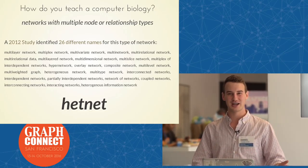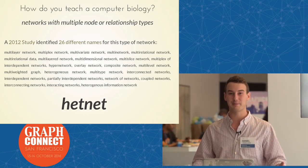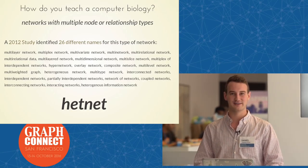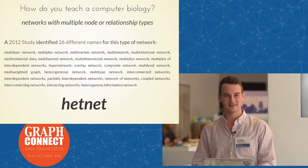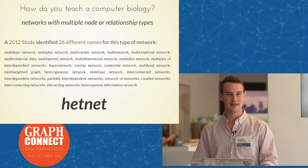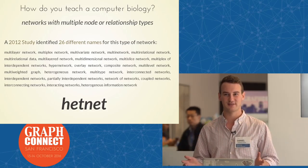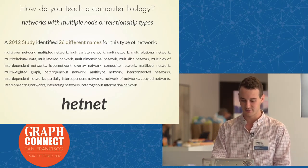The Neo4j community often refers to the property graph, and this really is the same thing, but HETNET focuses on the fact that every node and relationship has a type. That's what we wanted to bring to biomedical study that hadn't previously been in network biology or medicine.